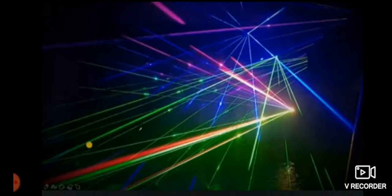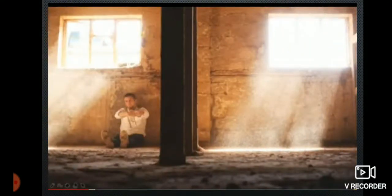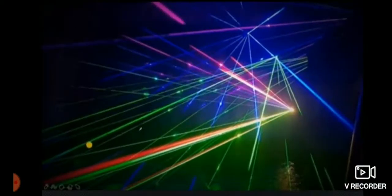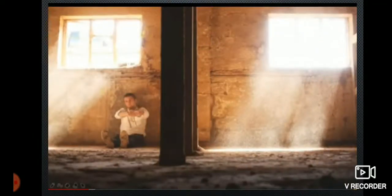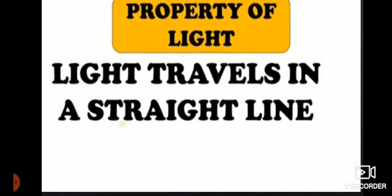Have you seen the light of the sun passing through the leaves of the trees? It's wonderful, right? You might have seen the laser beams and also the light passing through the windows. From all this, we can understand that light travels in straight line. And also, through an activity, we can prove it. The property of light is that light travels in a straight line.